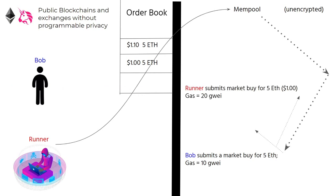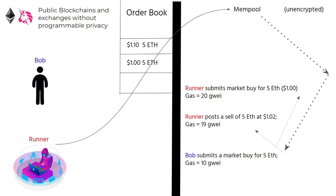Here is how. The runner submits a market buy of 5 ETH, same as Bob, but using a higher gas price. When he does this, he will be serviced first — the transaction with the higher gas price is serviced first. Next, the runner submits a sell that will occur after the front-runner's market buy, but importantly before Bob's 5 ETH purchase.